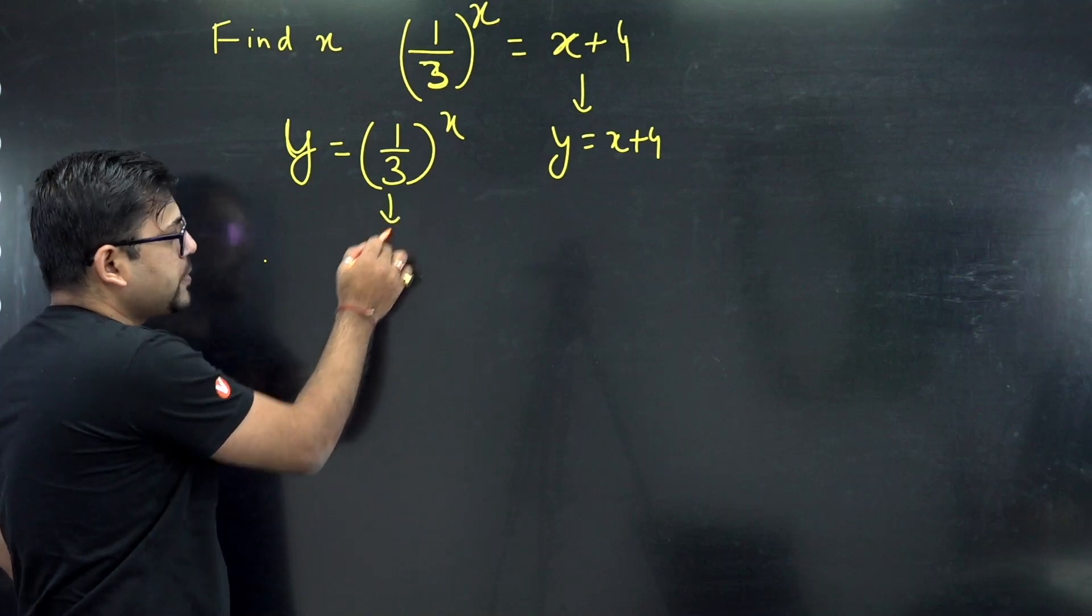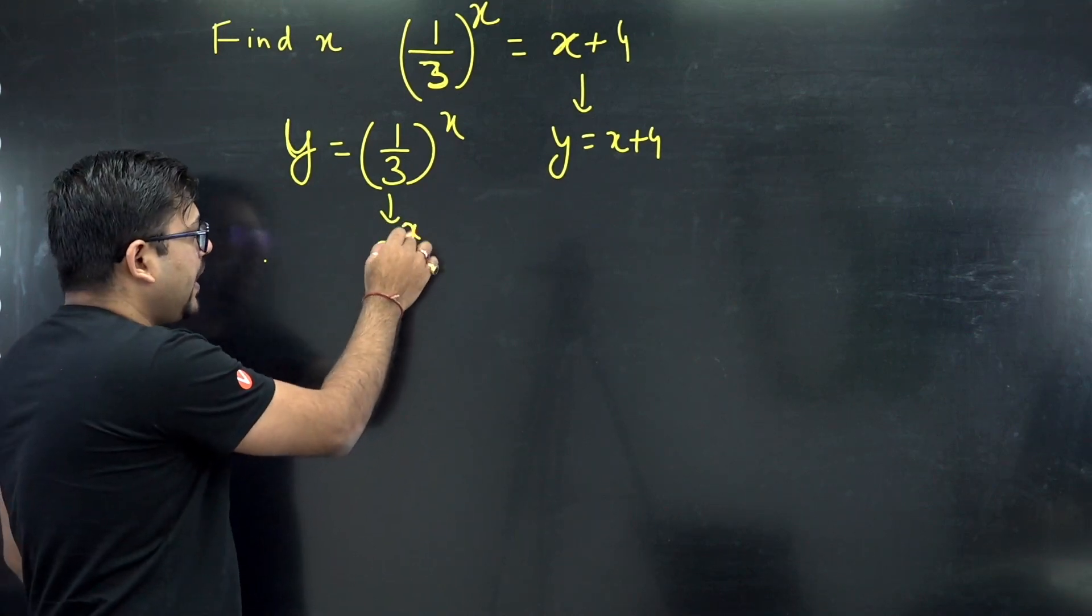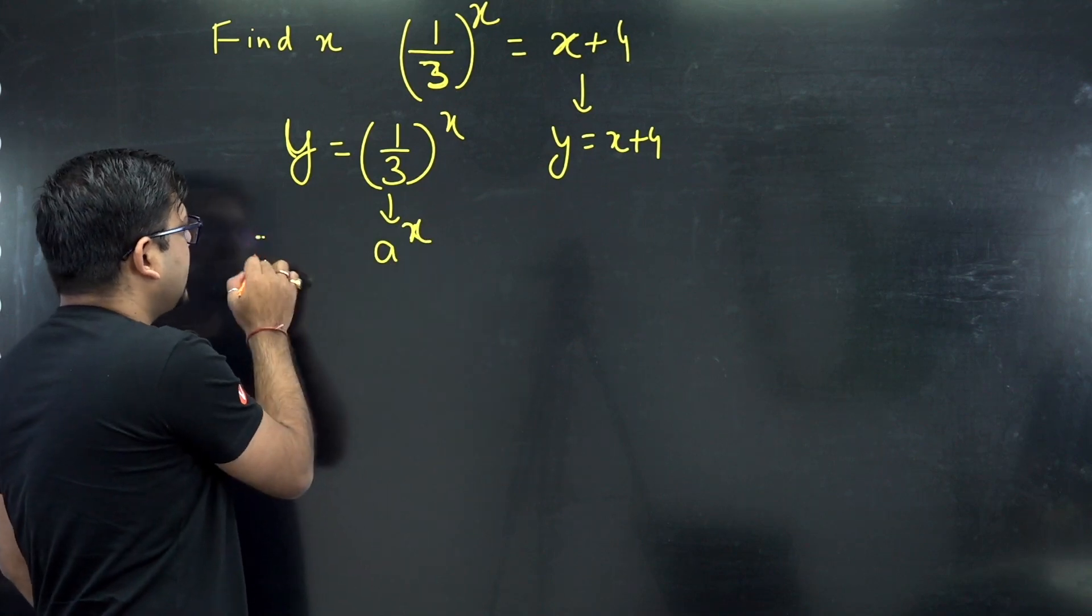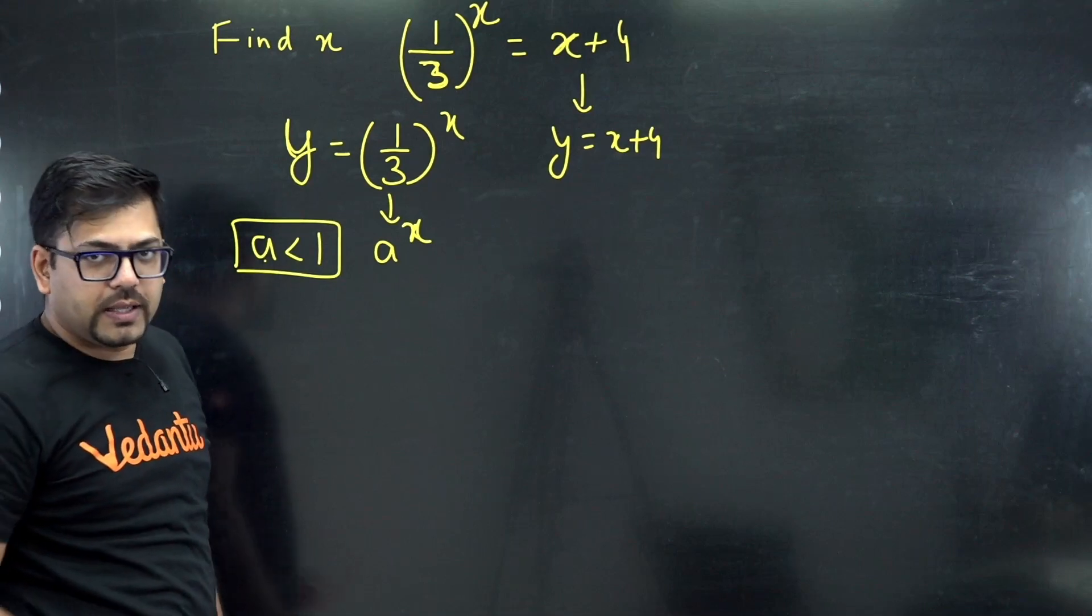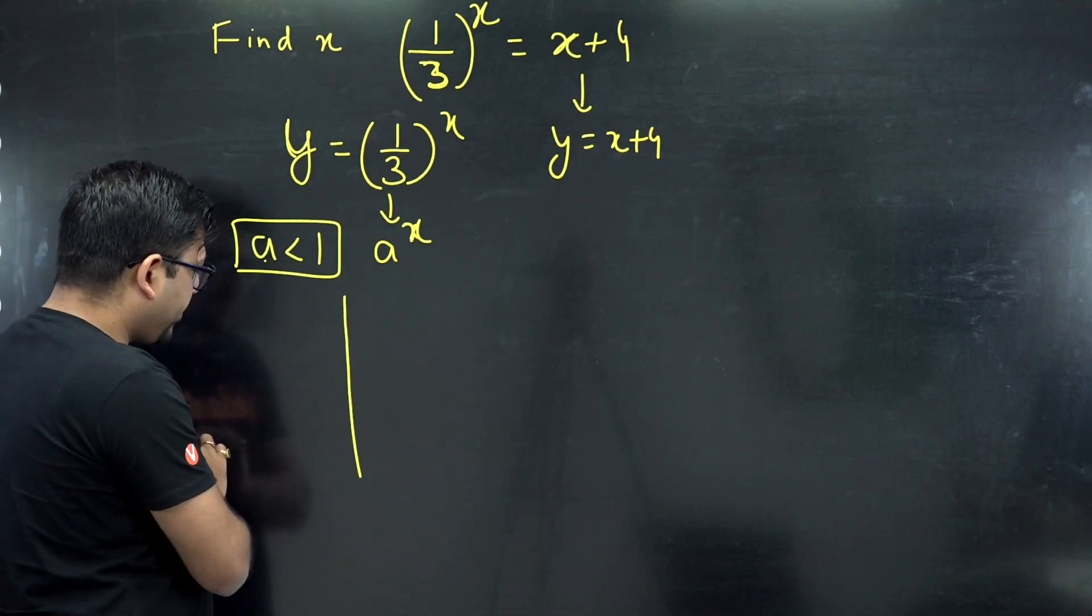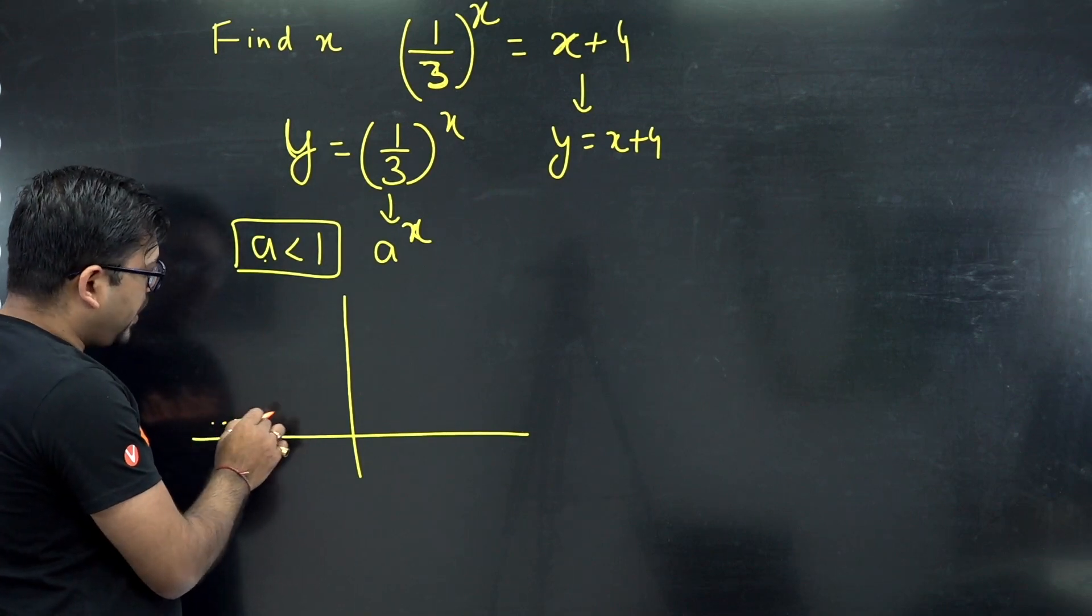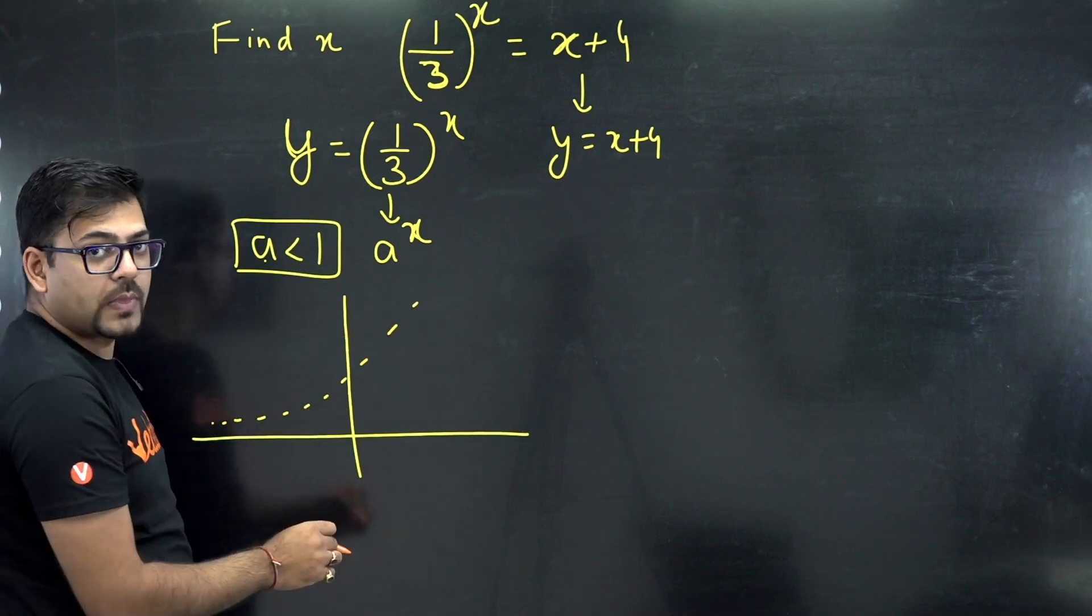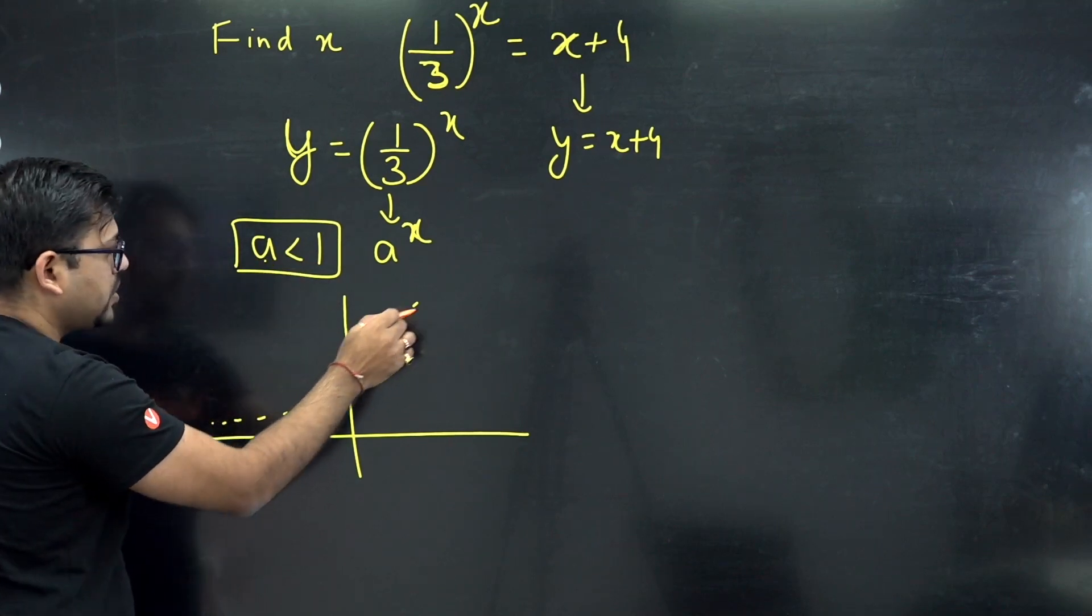Now let me tell you, here it is an exponential graph of the format a raised to power x, but here the a is a value less than 1, a less than 1. So whenever you have a less than 1, in that scenario what happens the graph that you make, so normal graph for a raised to power x is like this. But if you have a where a is less than 1, then this graph becomes like this.